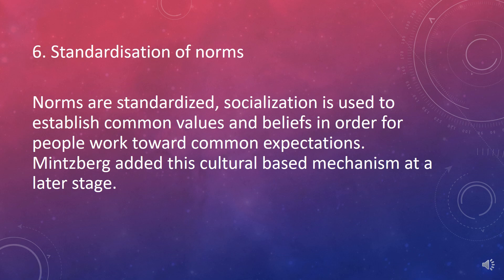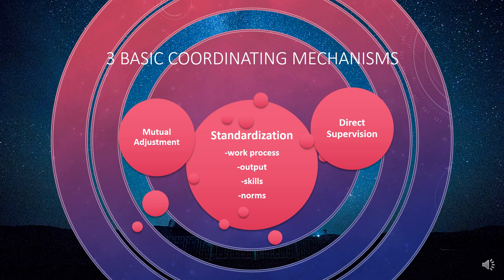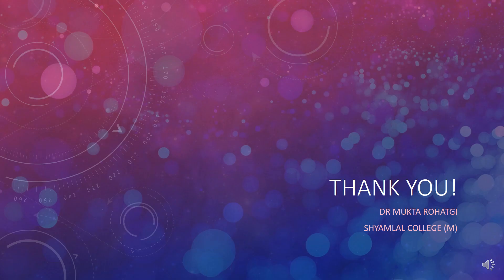To summarize, Mintzberg's six coordination mechanisms are actually three basic types: mutual adjustment as the informal one, direct supervision creating the authority-responsibility chain, and standardizations — of work processes, output, skills, and norms. All these contribute to coordinating mechanisms in an organization. We have learned how coordinating mechanisms are important and significant to achieve the final objectives of the firm — they are the backbone of the system. Thank you very much for listening and we will come in the next session with another topic.